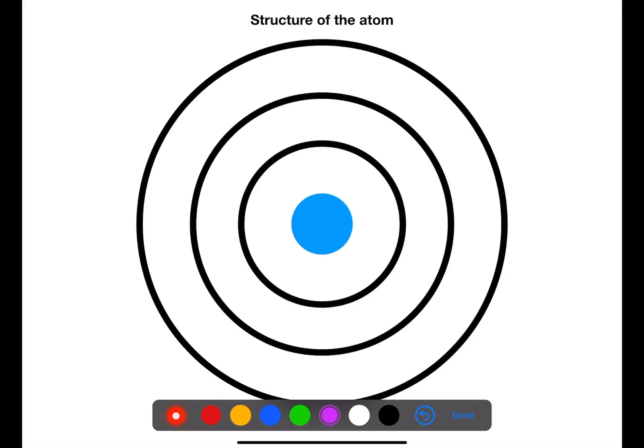First let's look at the structure of the atom. This is a simple Bohr model of an atom. The blue circle represents the nucleus. The circles around are the energy levels where you will find the electrons.